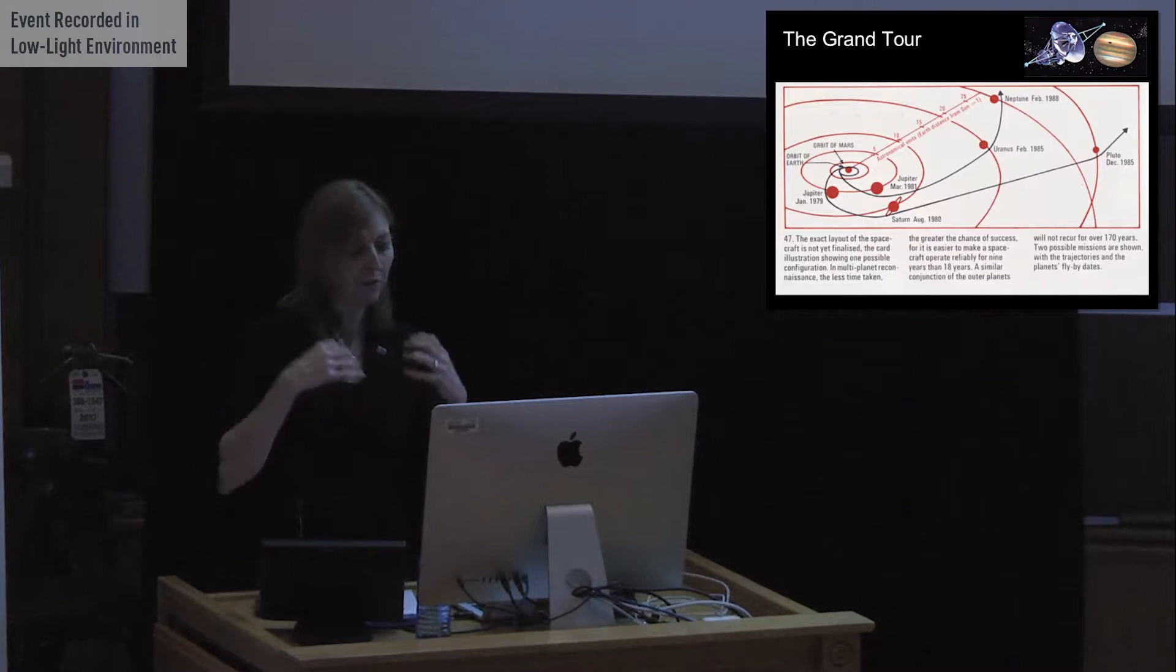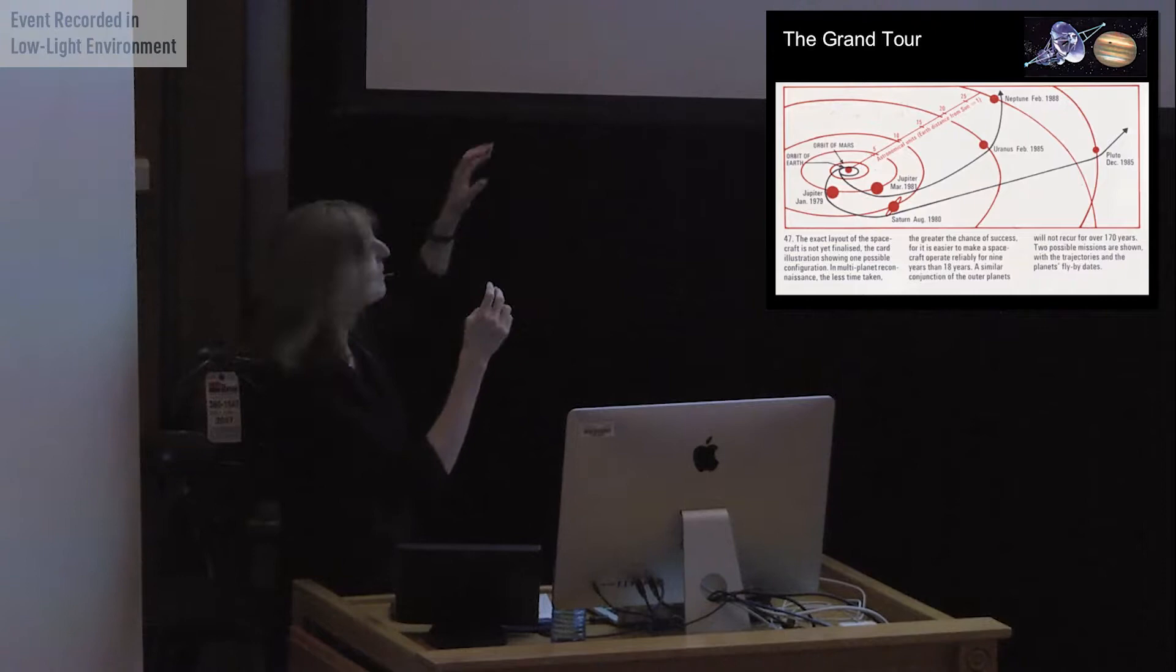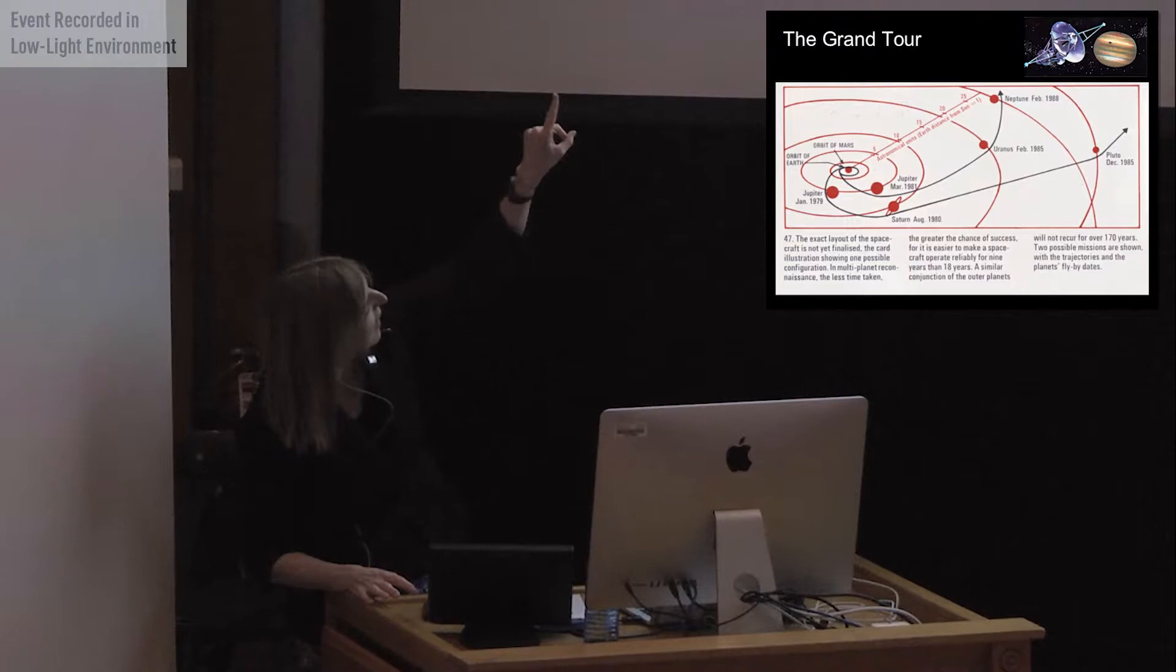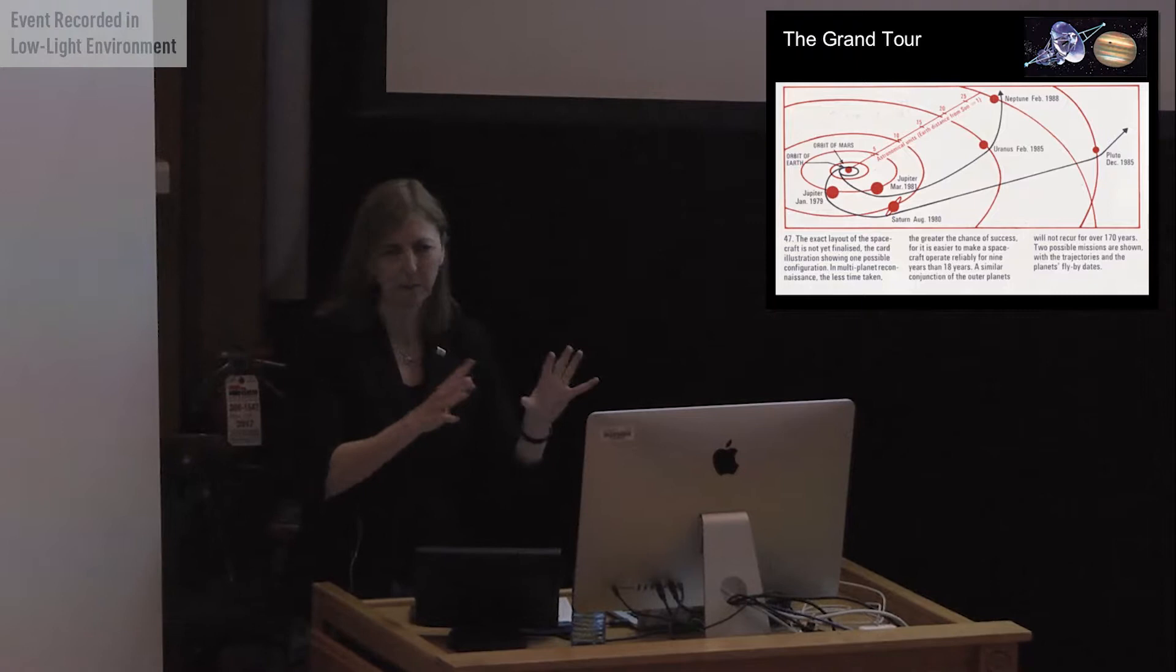And so they decided to send two precursor spacecraft, the Pioneers, Pioneer 10 and 11, to see if they could resolve this problem. This is actually a cigarette card or something back in the days when people smoked cigarettes, of the Grand Tour. And this just shows the alignment of the bodies. This was the plan of the Grand Tour, where they would actually send two spacecraft to go by them all. But first of all, they had to go and see if it was safe to do that.